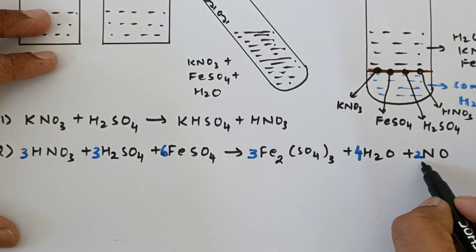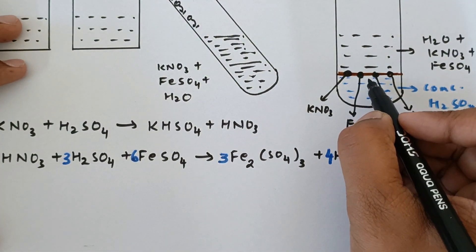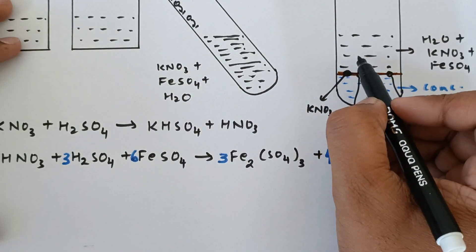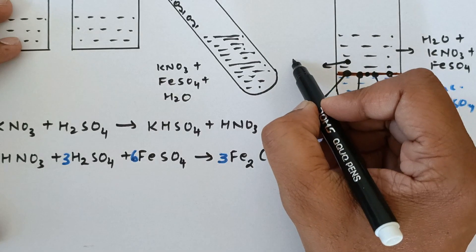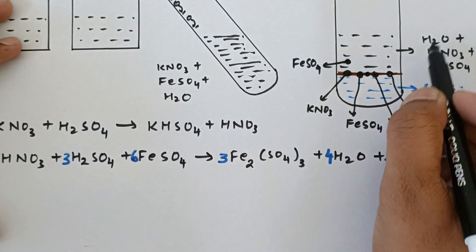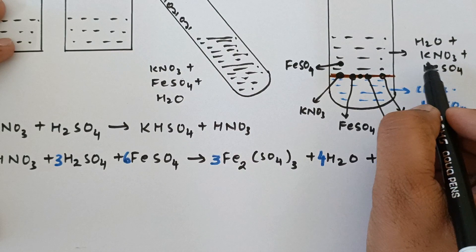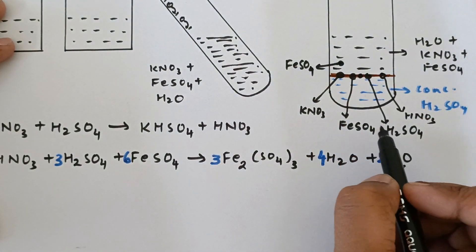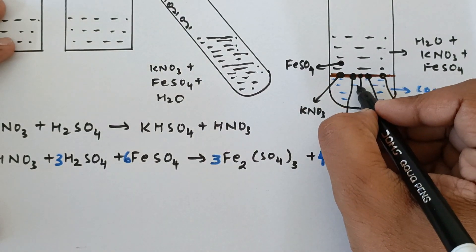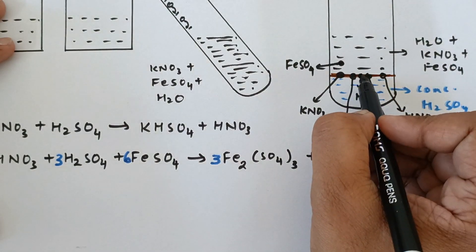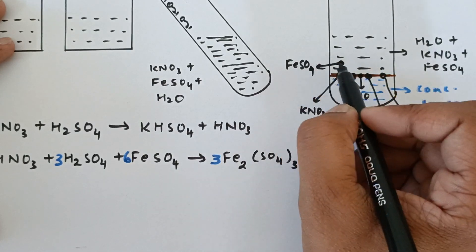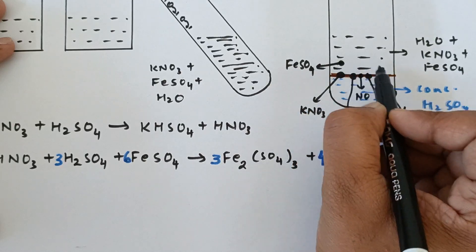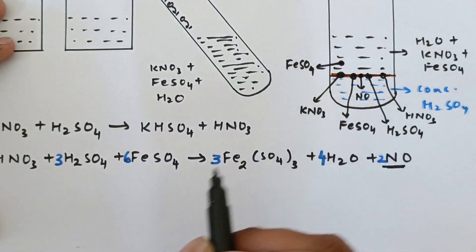Now since we have NO which is again formed at the interface over here, just above the interface we also have FeSO4 molecules here as well. Because in this mixture we will find a lot of H2O, KNO3, as well as FeSO4 here. Now this NO which is formed at the interface, that is nitrous oxide, reacts with the FeSO4 molecules just present above it. Because over here you will have a lot of FeSO4 molecules just above this interface as well.